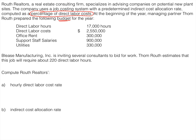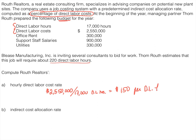Bleaks Manufacturing, Inc. is inviting several consultants to bid for work. Tom Ruth estimates that this job will require about 220 direct labor hours. The first thing we want to do is compute our hourly direct labor cost rate. We have two things associated with direct labor: direct labor cost and direct labor hours. To get a rate we divide cost by hours — $2,550,000 divided by 17,000 direct labor hours — giving us a rate of $150 per direct labor hour. So that's our direct labor cost rate.